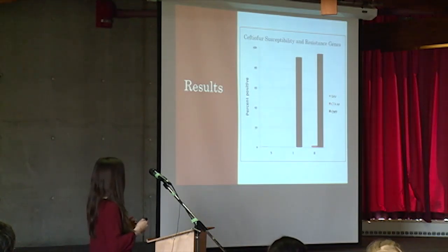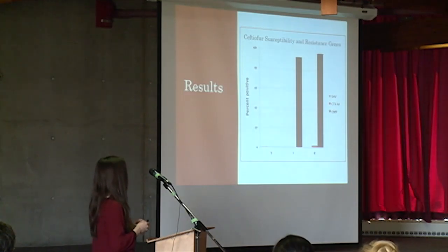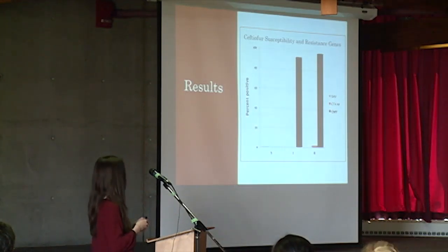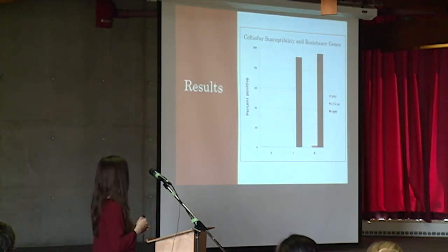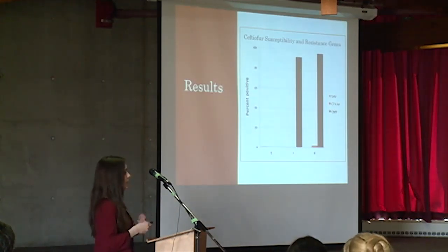This next graph is similar but for Ceptyophore — showing Ceptyophore susceptibility and resistance genes. We found that isolates that were intermediate or resistant towards Ceptyophore almost all carried the gene CMY, while those susceptible to Ceptyophore barely carried CMY.